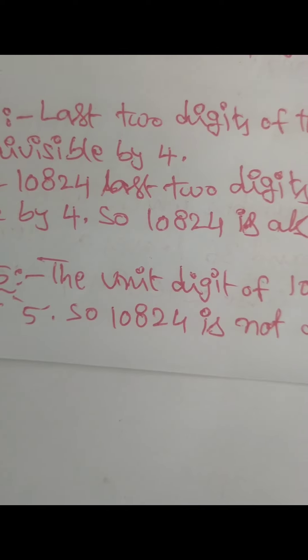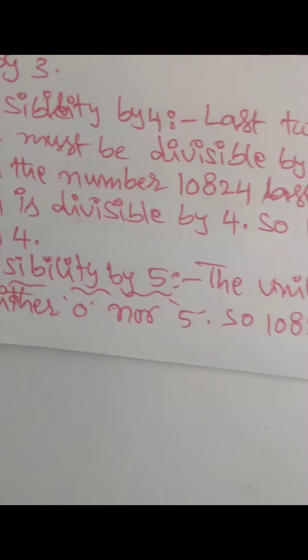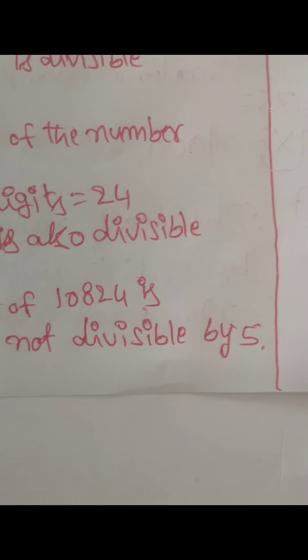Check divisibility by 5. The unit digit of the given number is neither 0 nor 5. So the given number is not divisible by 5.